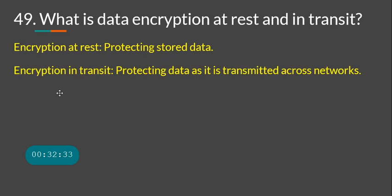What is data encryption at rest and in transit? Encryption at rest means protecting stored data — for example, using BitLocker for full-drive encryption. Encryption in transit means encrypting data as it moves from one endpoint to another over the internet — using HTTPS is an example. When data is in motion it is encryption in transit; when stored it is encryption at rest.